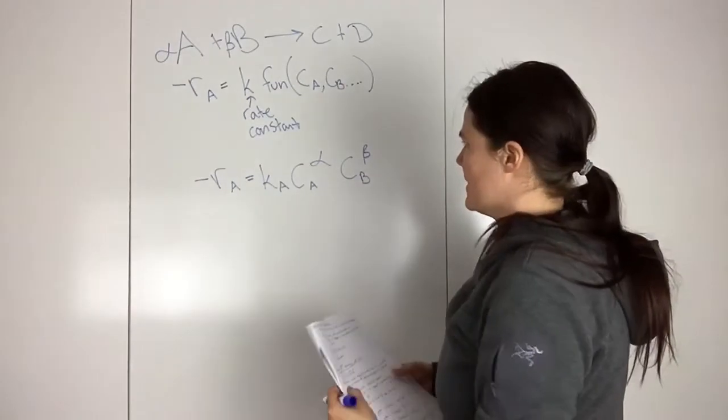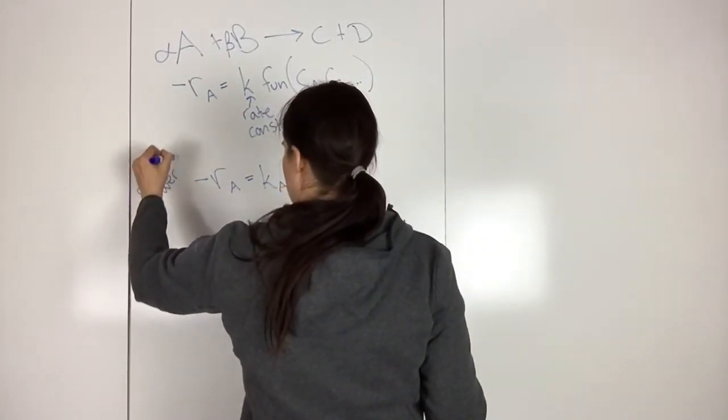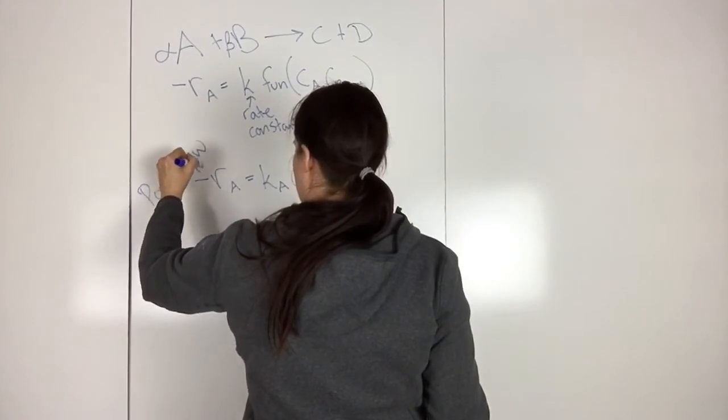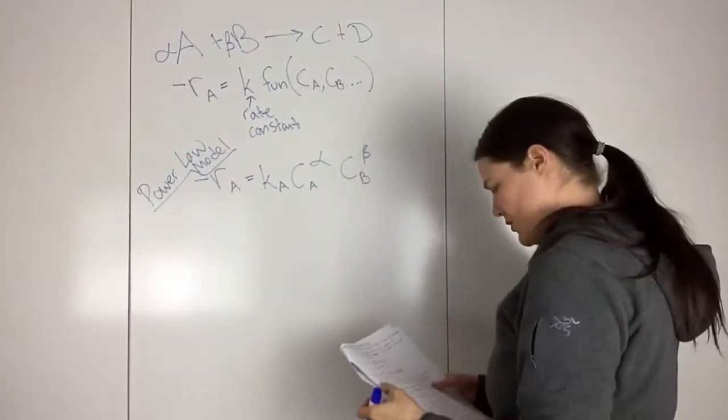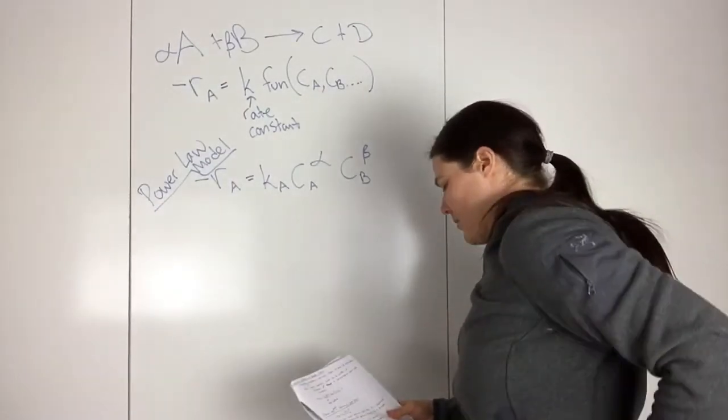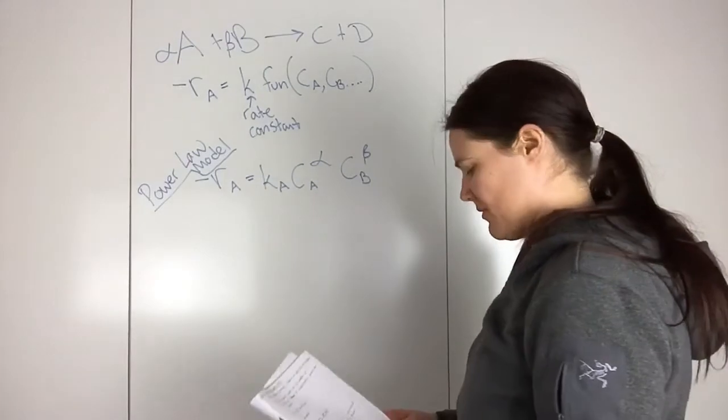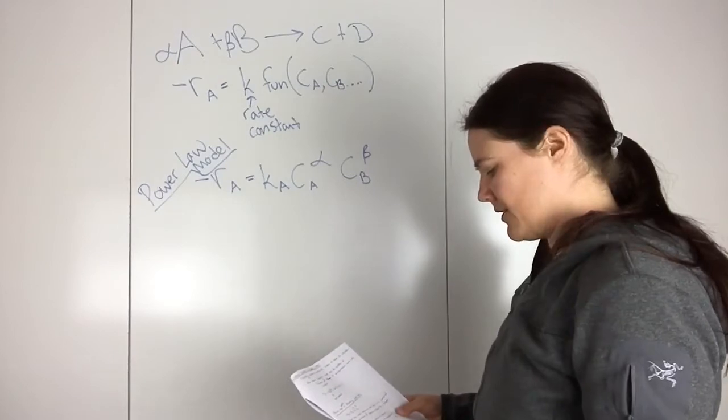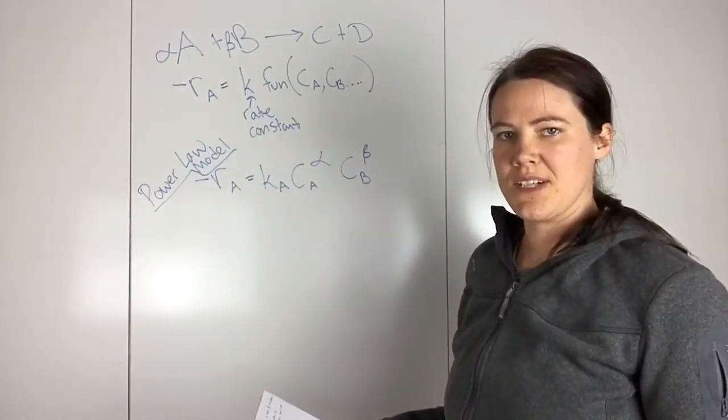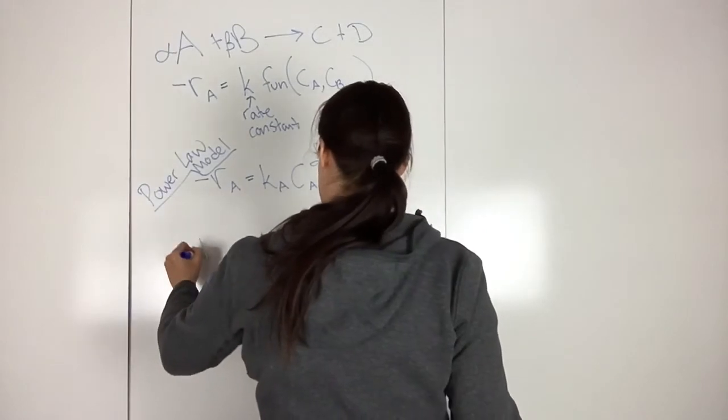So the power law assumes that your rate law is a product of the concentration of the species raised to a power. And so they have this thing called reaction order, and the reaction order refers to the power.